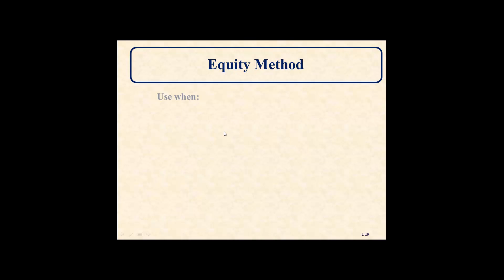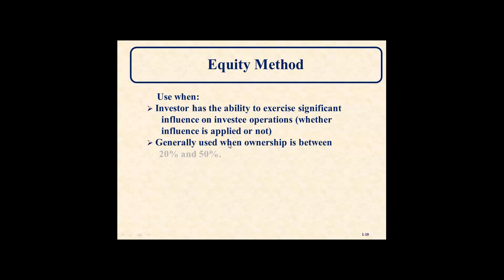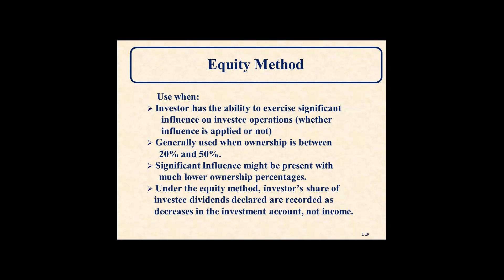The equity method: You use the equity method when the investor has the ability to exercise significant influence over the investee's operations — whether influence is applied or not; you don't actually have to influence the company, but it's your ability to do so. Generally it is used when ownership is between 20% and 50%. So fair value is under 20%, consolidation is over 50%, and the equity method is the in-between. Significant influence might be present with much lower ownership percentages; in that case, under the equity method, the investor's share of the investee's dividends declared are recorded as decreases in the investment account, not as income.